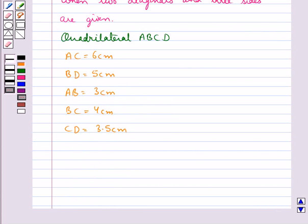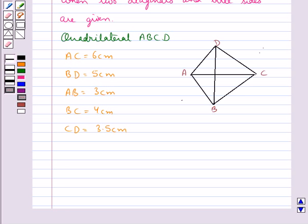First let us draw a rough sketch for this quadrilateral ABCD. This is the rough sketch of the quadrilateral ABCD where AB is 3 cm, BC is 4 cm, and CD is 3.5 cm. These are the three sides of the quadrilateral. And we have AC is 6 cm and BD is 5 cm. These are the two diagonals of the quadrilateral.